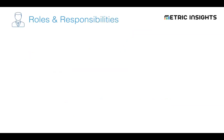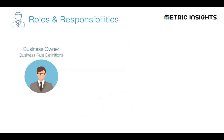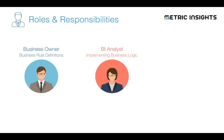Let's talk about roles and responsibilities. There are three primary roles involved. First, the business owner — these are the folks responsible for defining the rules that govern how data should be interpreted. What defines sales? What defines revenue? What defines churn? All the main things that are going to be measured in a report or dashboard have to have somebody defining what that means, and usually the business provides that consistent definition. Then you have the BI analyst, who is responsible for taking that information and implementing the business logic so that reports and dashboards are created with a consistent definition.